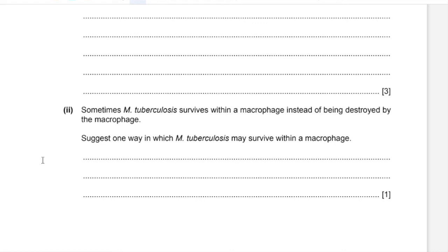Part A(ii): Sometimes M. tuberculosis survives within a macrophage instead of being destroyed. State one way in which M. tuberculosis may survive. Because the pathogen is a bacterium, you can use reasons similar to antibiotic resistance, as it involves enzyme activity. The enzyme activity can be sabotaged by enzyme inhibitors that make the digestive enzymes from lysosomes ineffective, and therefore prevent the macrophage from destroying the bacteria.